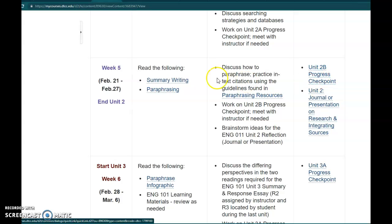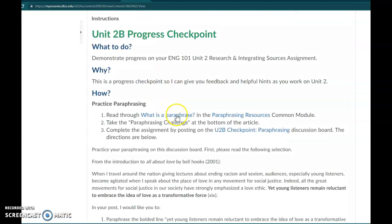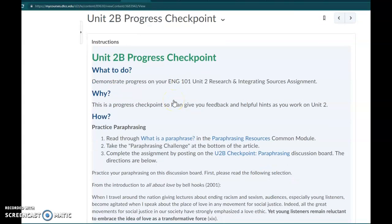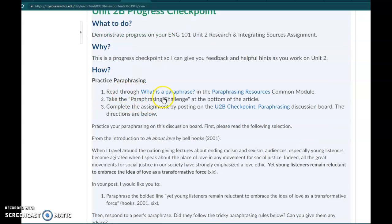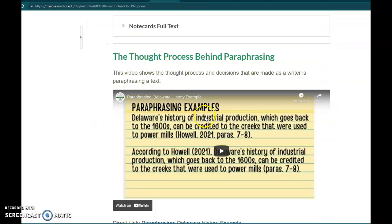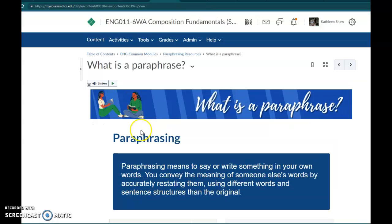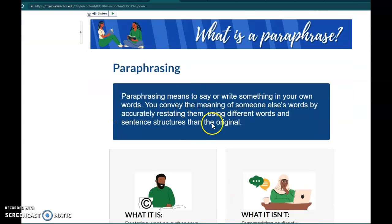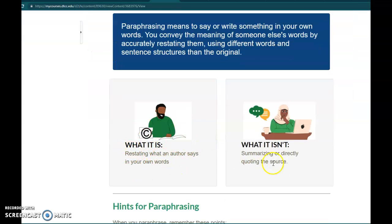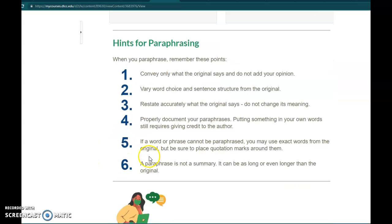I want to talk a little bit about the Unit 2B Progress Checkpoint. I already have it pulled up here. In it, I just have a list of steps I want you to take to familiarize yourself further with paraphrasing, because it's one of the trickiest skills. The first thing I want you to do is read the article, 'What is a Paraphrase?' It explains what paraphrasing is, gives a definition, explains what it is and what it isn't, and gives these really helpful hints of things you want to pay attention to.